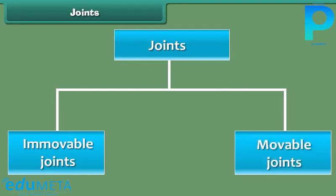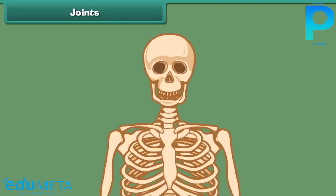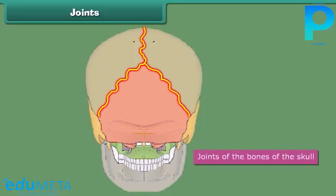Immovable joints are the joints where no movement of the bones is possible. The joints of the bones of the skull are immovable joints.